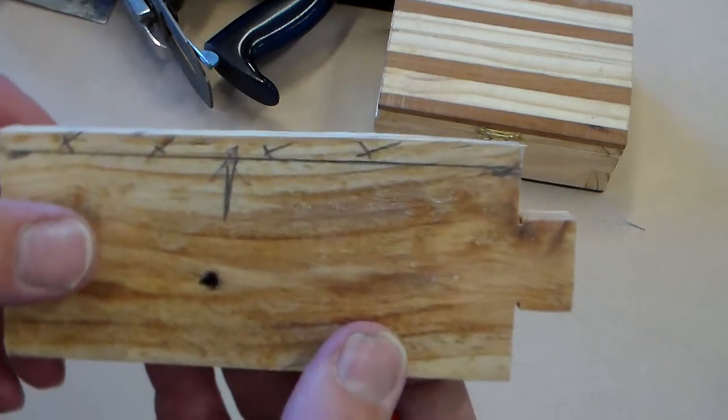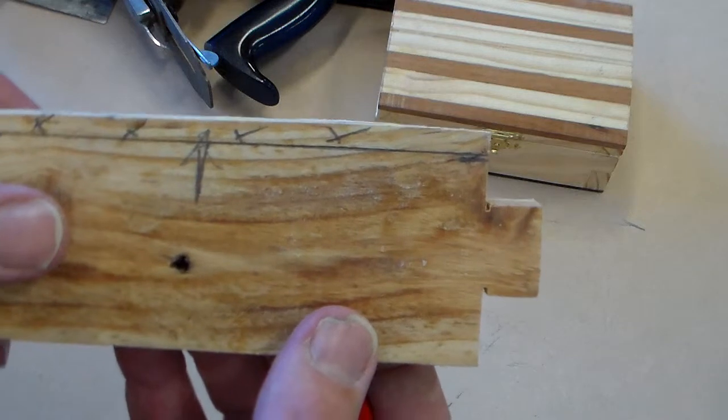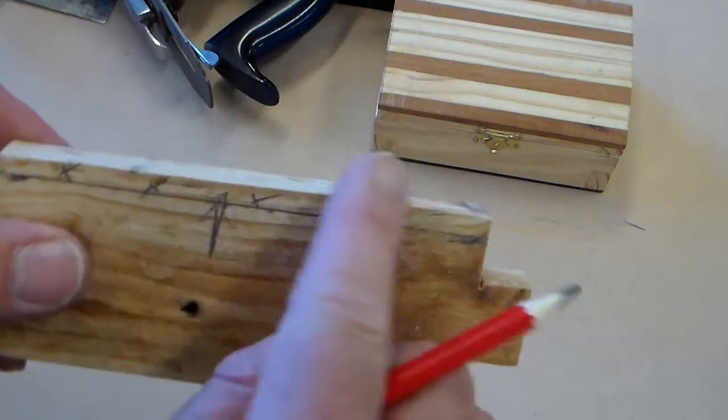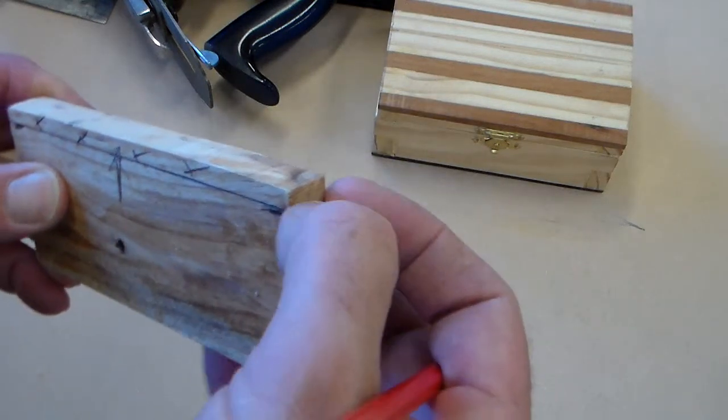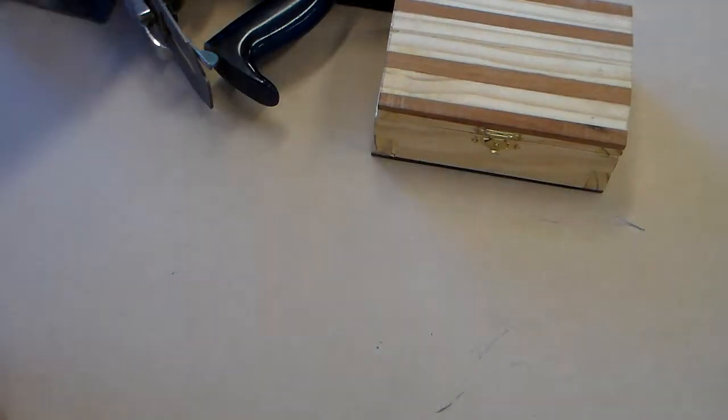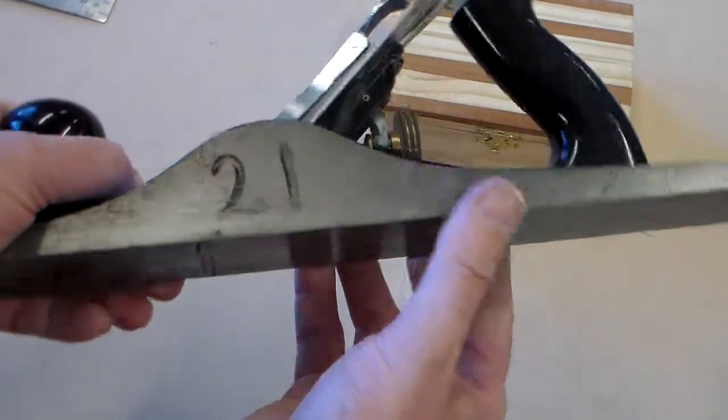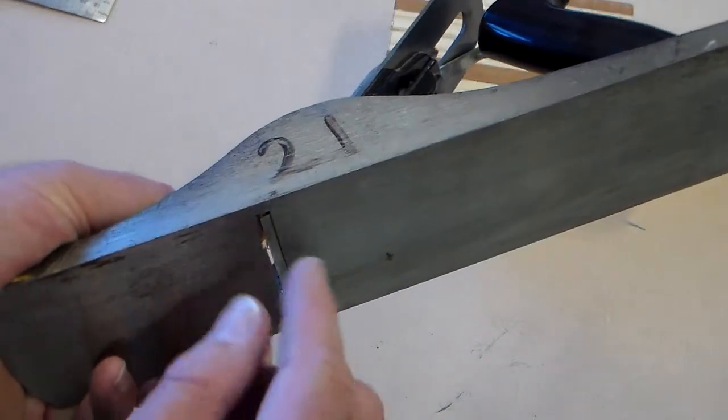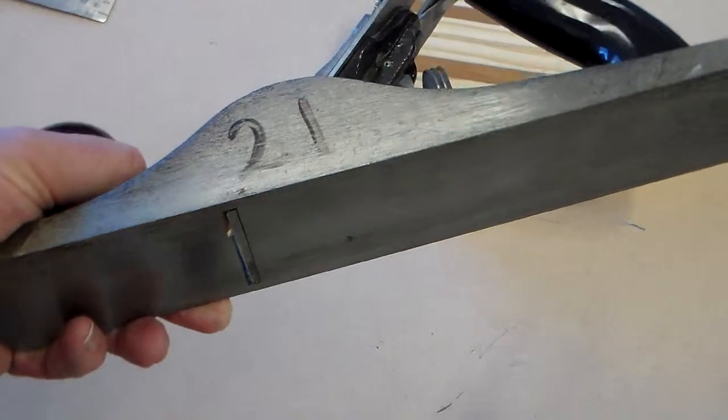Now to do this, to take this material off the end, we're going to use this tool. This is a plane. This has a blade in here which just takes off a thin layer of wood.